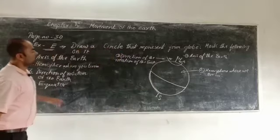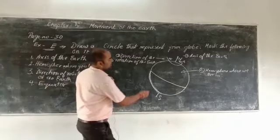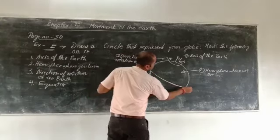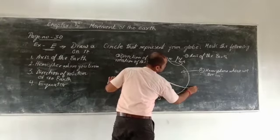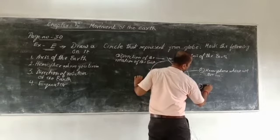And last one is equator. You have to mark the equator. Where is equator? Right in the middle part. You will mark it as number four. So you will write here: four, equator.